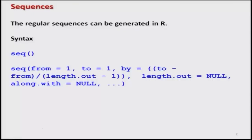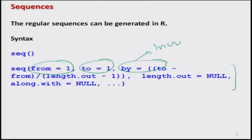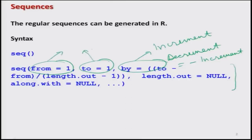One thing to keep in mind is that the value 'by' gives an increment. The syntax we used had 3 values: from, to, and by. Always remember that 'by' gives the increment, and if you want a decrement, it is always taken as a negative times the increment. This is the basic fundamental in generating a sequence. The 'from' and 'to' values can be positive integers, negative integers, or fractional values.